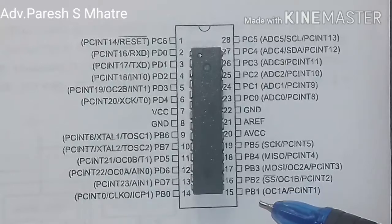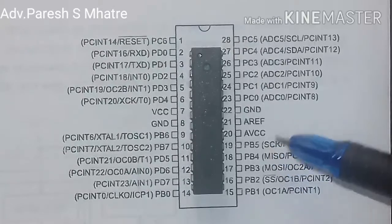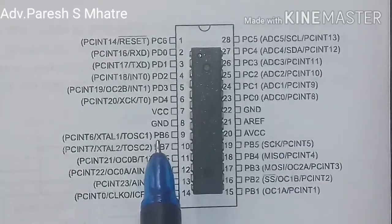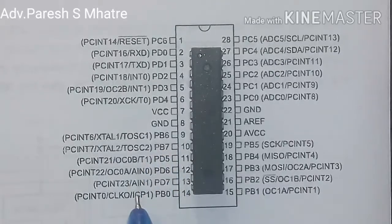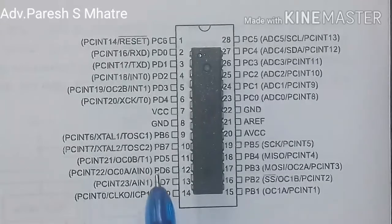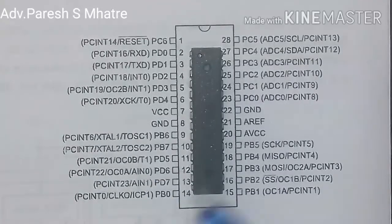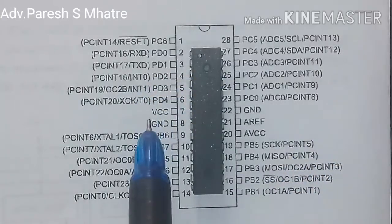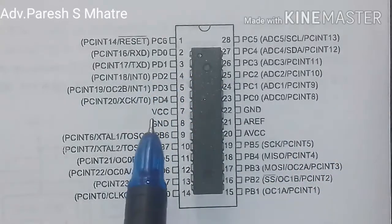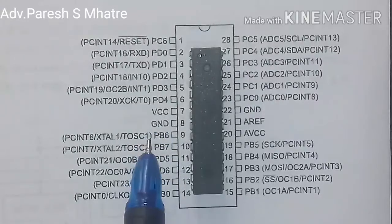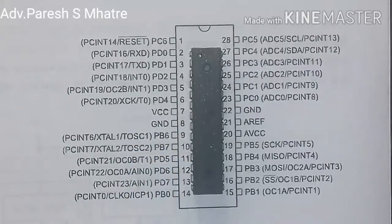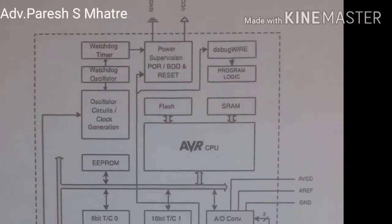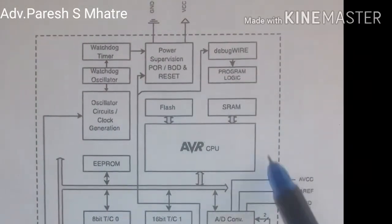Port B pins 1 to 5 correspond to pin numbers 14 through 18 respectively. Pin number 9 and 10 are Port B 6 and 7 respectively. Pin number 12 and 13 we are using for switches, which are Port D 6 and 7 respectively. Pin number 11 we are not using. There is a power supply on pin number 7 which is VCC, and ground on pin number 8.